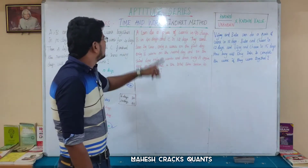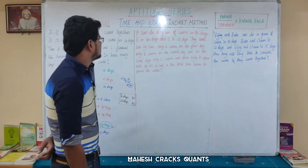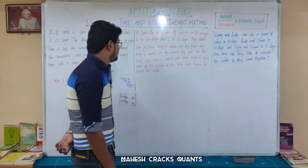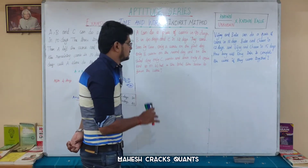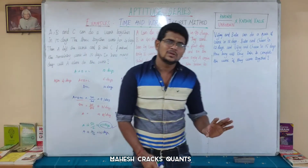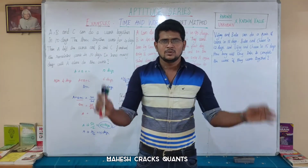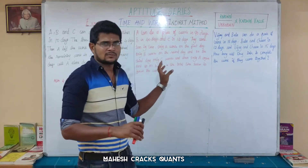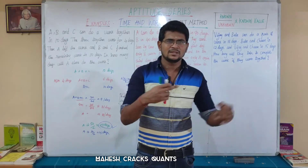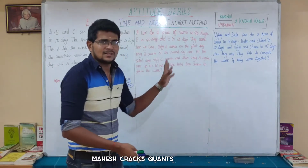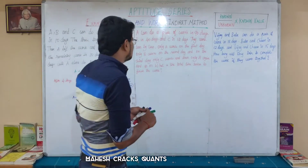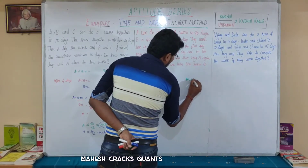Next question: A can do a piece of work in 90 days, B in 40 days, C in 12 days. Only A works on the first day, only B works on the second day, only C works on the third day, and then only A again, and so on. What is the total time taken to finish the work? So 3 people working A, B, C repeat in a cycle.